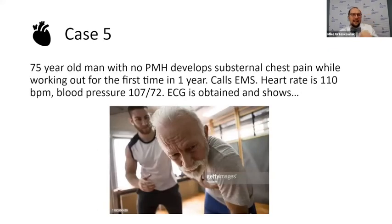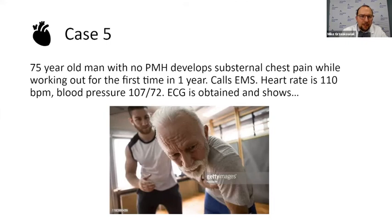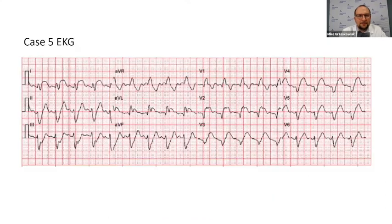Let's look at our last case. We have a 75-year-old man with no past medical history who develops substernal chest pain while working out for the first time in a year. He calls EMS with continued chest pain. He's a little tachycardic at 110, blood pressure is 107 over 72, and we get an EKG. Let's take a look.